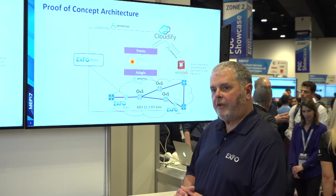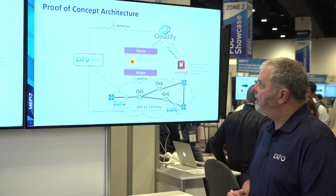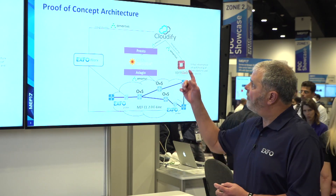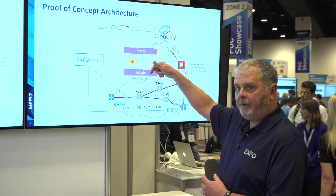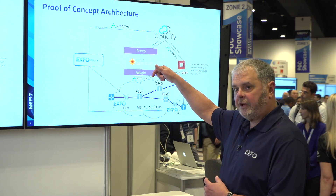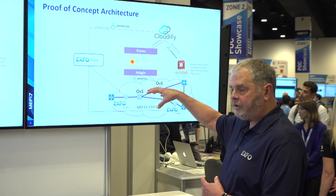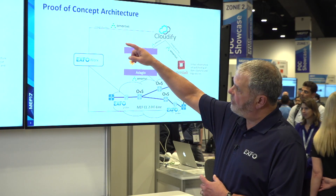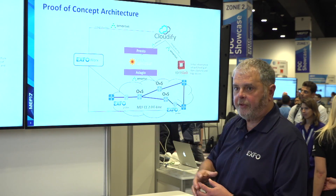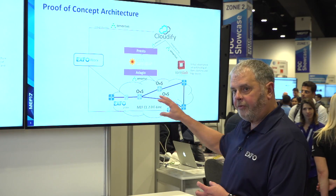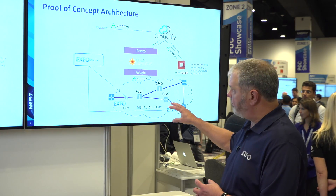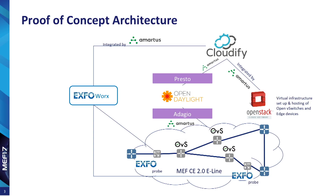This is the picture of the architecture we're going to be using today. At the top level is the Cloudify management system or orchestrator, using APIs to go down through the Presto API to OpenDaylight for the SDN controller to manage the OVS switches, as well as the REST API going down through the ExoWorks system to manage and control the ExoVerifiers or probes that are deployed and sitting on the OpenStack controller.